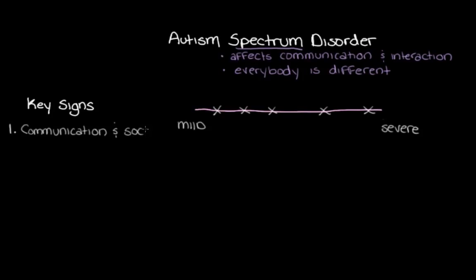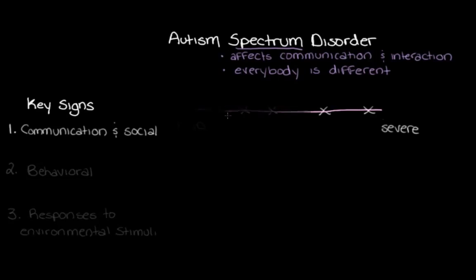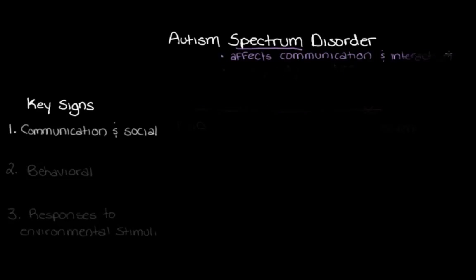Our next category will be behavioral signs, and then our last category is responses to environmental stimuli — just the way someone responds to things that they see or encounter. That will make more sense as we get to it. Let's start off by looking at this first category: communication and social signs.